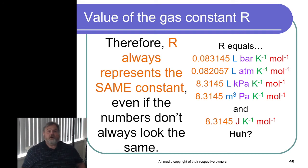So it turns out that R can be 0.083145 liter bar per kelvin per mole, or 0.082057 liter atmosphere per kelvin per mole. We've changed bar and atmosphere, our measures of pressure. That's going to change the value.